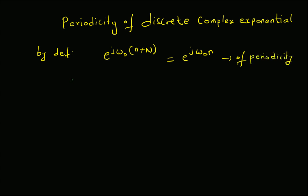Now let us verify the conditions for this periodicity property — what is the required condition for periodicity of a discrete complex exponential? From the definition itself we can clearly see that e^(jω₀N) should be equal to one. If this condition is satisfied, then e^(jω₀n) will be a periodic signal.